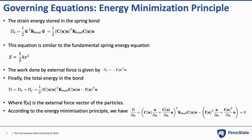Using the energy minimization principle, we can find the strain energy stored in the spring bond, given by equation 1, which is similar to the fundamental spring energy equation E = ½Kx². The work done by external force is given by another equation. Using all these relationships, we can find the total energy in the bond, where F(U) is the external force vector of the particles. According to the energy minimization principle, we have an equation for which we need to find a solution.